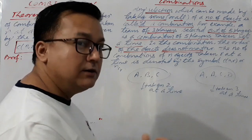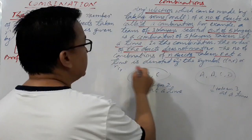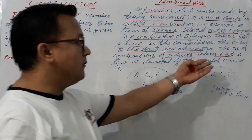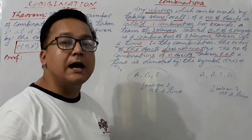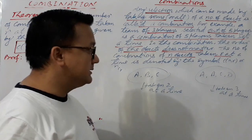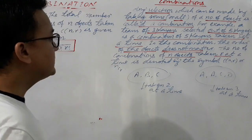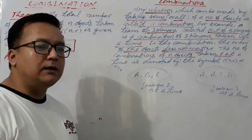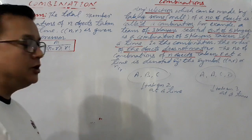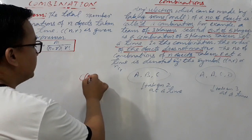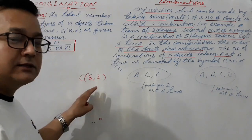Regarding notation: the number of combinations of n objects taken r at a time is denoted by the symbol C(n,r) or nCr — you can use either one, there is no problem for representation. For example, if I want to make a selection of two questions out of five questions, symbolically I write C(5,2) — combination of five questions taken two at a time. This is the notation.